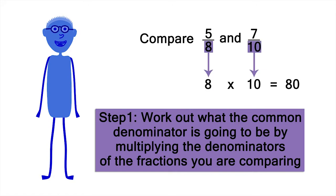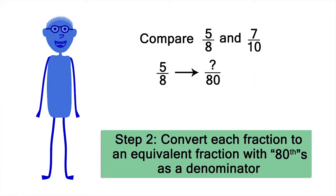8 times 10 is 80. Now let's convert 5 eighths to an equivalent fraction that has 80ths as the denominator. What do you have to multiply 8 by to get 80? 10.